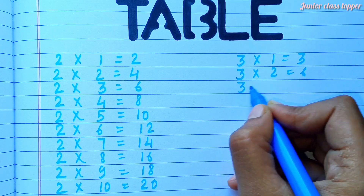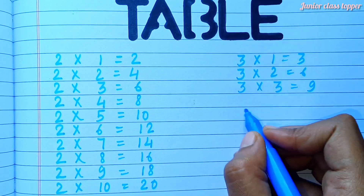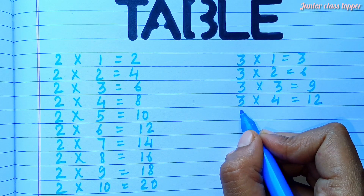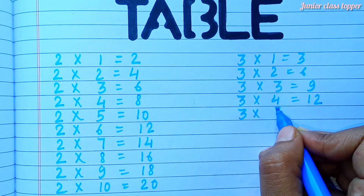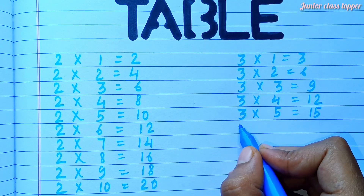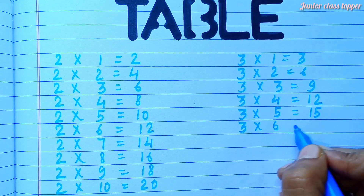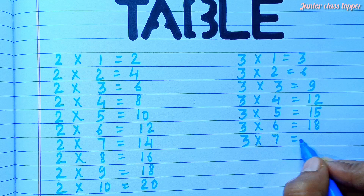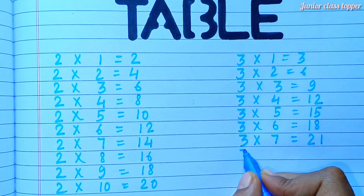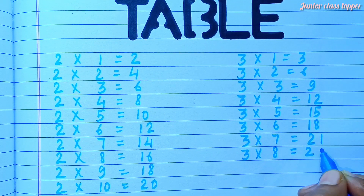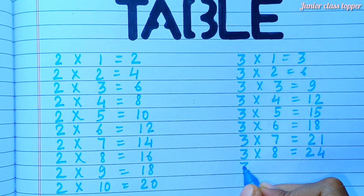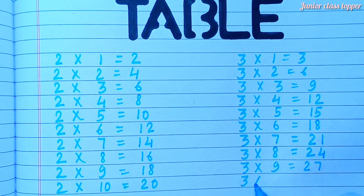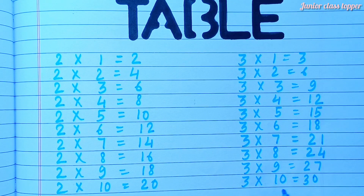Three threes are nine. Three fours are twelve. Three fives are fifteen. Three sixes are eighteen. Three sevens are twenty-one. Three eights are twenty-four. Three nines are twenty-seven. Three tens are thirty.